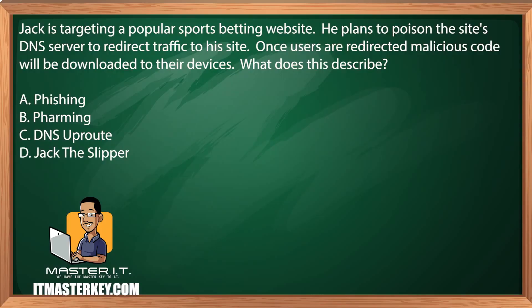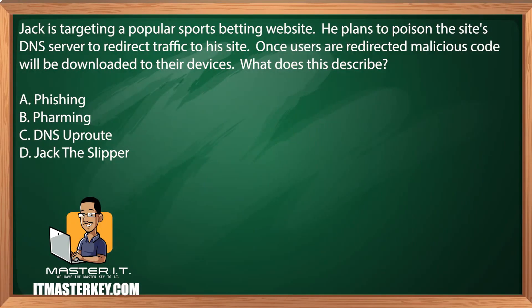Jack is targeting a popular sports betting website. He plans to poison the site's DNS server to redirect traffic to his site. Once users are redirected, malicious code will be downloaded to their devices. What does this describe?